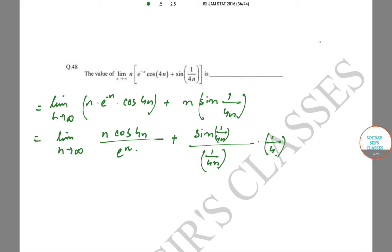Because we know this very crucial fact: limit as x goes to 0 of sin(x)/x is equal to 1. So this thing as n goes to infinity converges to 1, and this part converges to 1/4. So what we are just left with is limit n goes to infinity of n·cos(4n)/eⁿ.